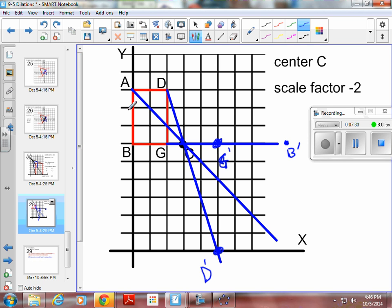And what am I missing? I'm missing A. So down 1, 2, 3, forward 1, 2, 3. So I want to go down 1, 2, 3, 4, 5, 6. 1, 2, 3, 4, 5, 6. And there's my A prime.